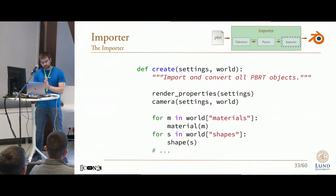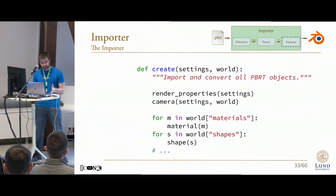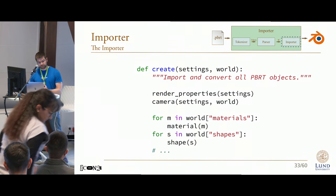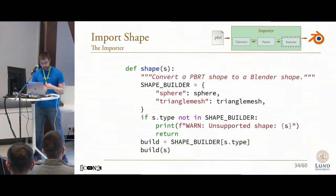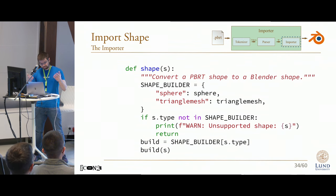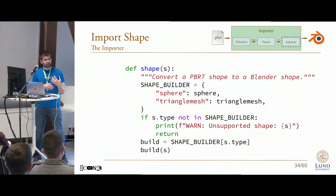The last thing we need to do is simply convert this representation to Blender objects, and that is what happens in the actual importer part. That part is not particularly fancy — it simply applies the appropriate rendering and camera properties, then loops over each of the quantities that should be converted from PBRT objects to Blender objects. When I import a single shape, I create a mapping over all shapes currently supported by the importer, and then call a dedicated function for that particular shape. This way, it's really easy to add new shapes without touching the rest of the infrastructure.